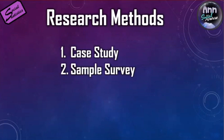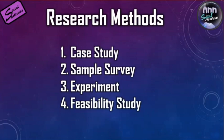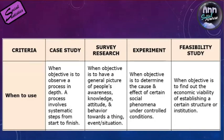Research methods can be case study, sample survey, experiment, and feasibility study. The case study is used when the objective is to observe a process in depth — a process involves systematic steps from start to finish. That's why anthropologists, who usually use the case study method, keep a diary of their fieldwork, recording their actions and observations from the first hour of the day up to the end of their fieldwork each day throughout the duration of the study.